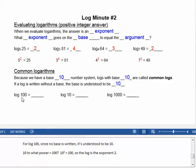For log 100, since no base is written, it's understood to be 10. 10 to what power equals 100? 10 squared equals 100, so the log is the exponent, 2.